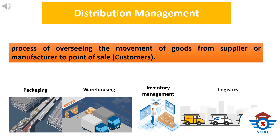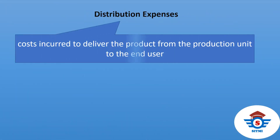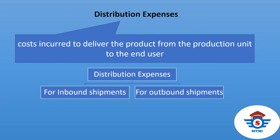Our first metric is Distribution Expense. All organization expenses vary with different requirements of the firm. Similarly, distribution expense varies based on the number of shipments received or sent to the customer. That is why distribution expense can be calculated in two different ways: distribution expense for inbound shipments and distribution expense for outbound shipments.